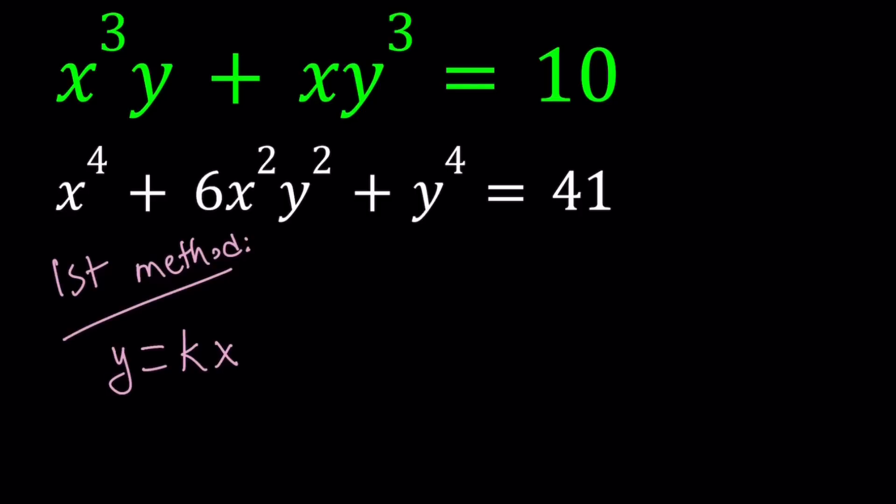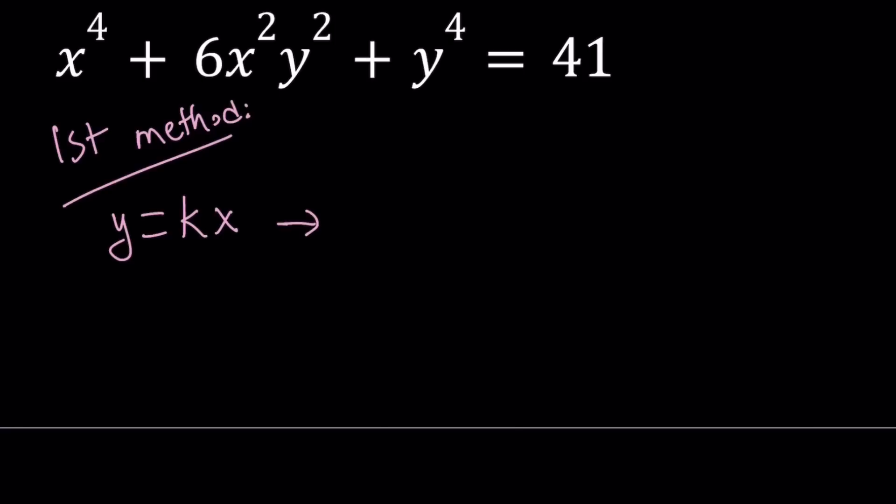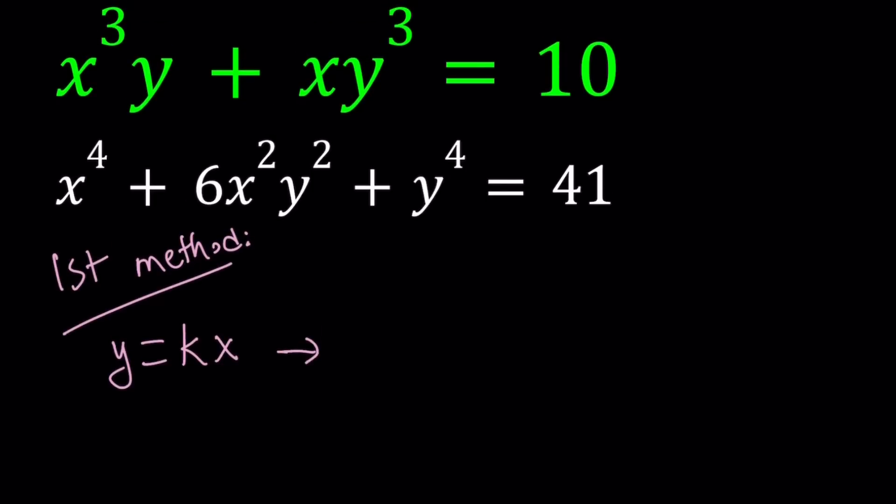In other words, if you replace y equals kx, y with kx, then you're going to get a nice system and you're going to be able to eliminate one of the variables. We're kind of changing the variable here a little bit to make this equation solvable. Alright, so by replacing y with kx, we get the following. First of all, from the top equation, we get kx multiplied by x to the third. So that's going to give us kx to the fourth power plus.